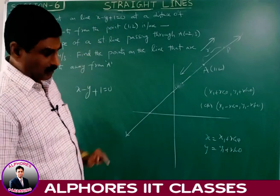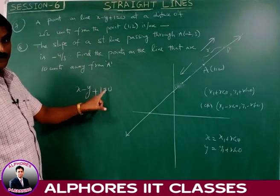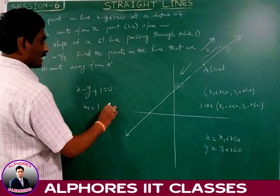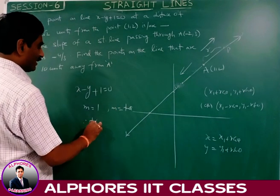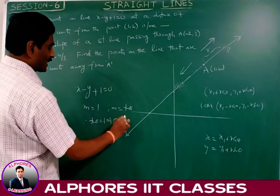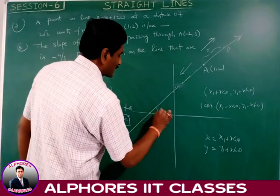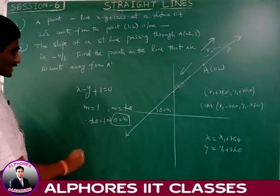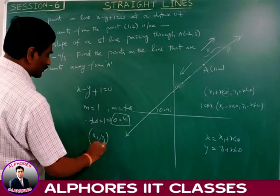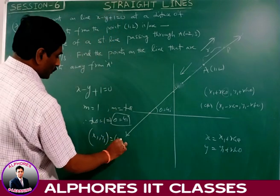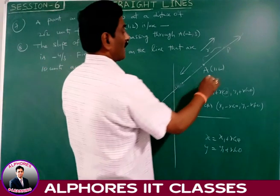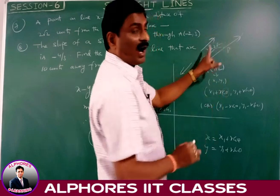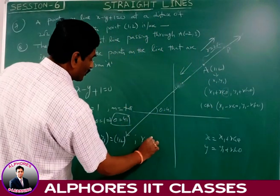The slope of line x minus y plus 1 equals 0 is 1, so tan θ equals 1, giving θ equals 45°. The given point is (x1, y1) equals (1, 2), and the distance is R equals 2√2. There are two possible points: one in the positive direction and one in the negative direction along the line.